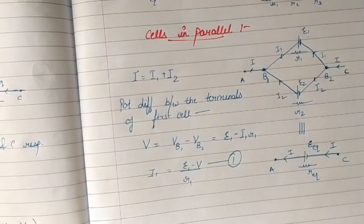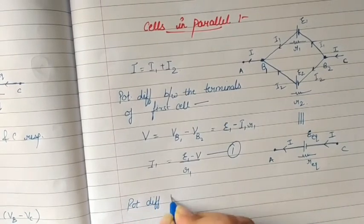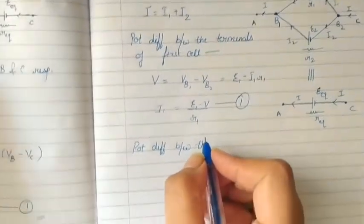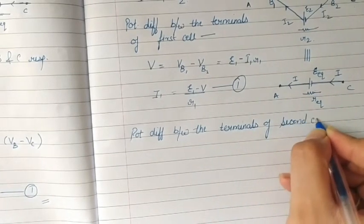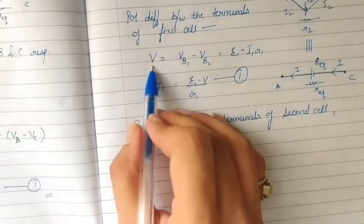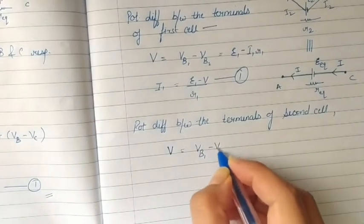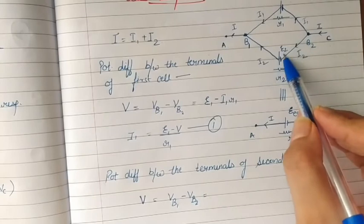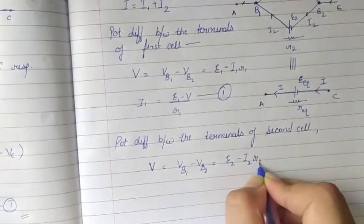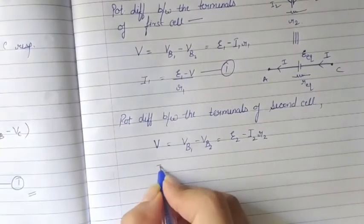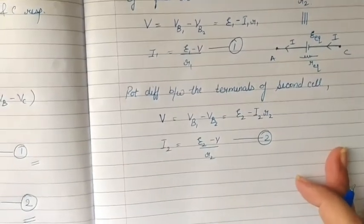Similarly, the potential difference between the terminals of the second cell. Again, the potential difference is the same because both cells are connected in parallel. V equals V B1 minus V B2, which equals epsilon two minus i two times r two. Rearranging, i two equals epsilon two minus V upon r two. This is equation number two.